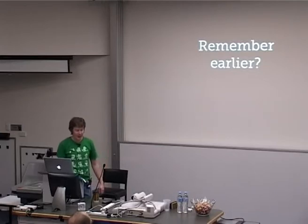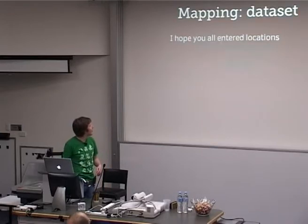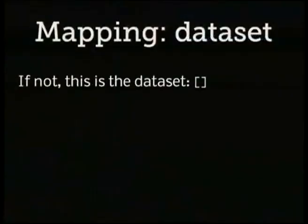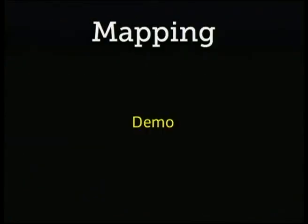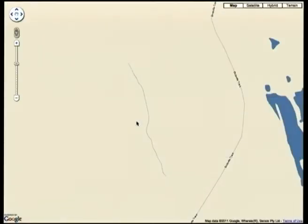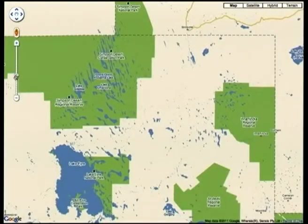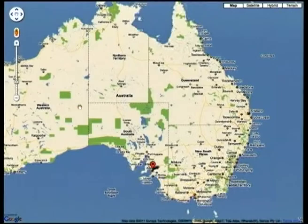Earlier on I had you all basically give me your personal details. I hope you all entered locations. Let's see how this went. What I've done here is a Google Maps visualization. I used Google Maps rather than OpenStreetMap basically for time reasons — I already knew the API.